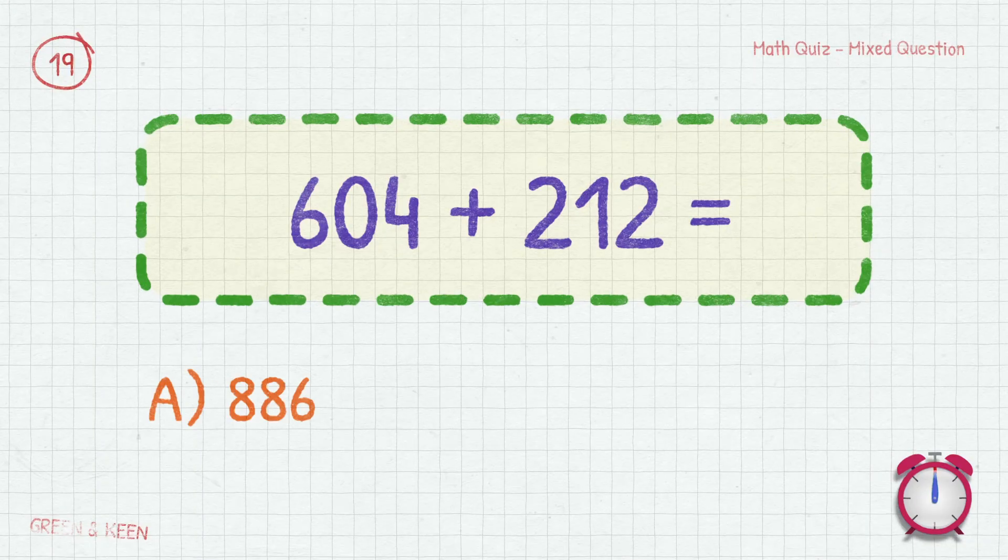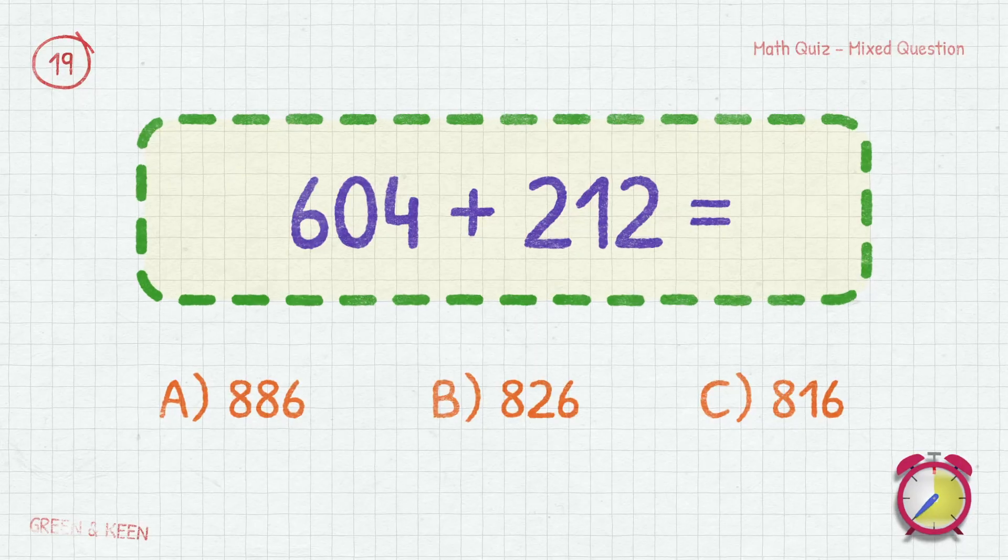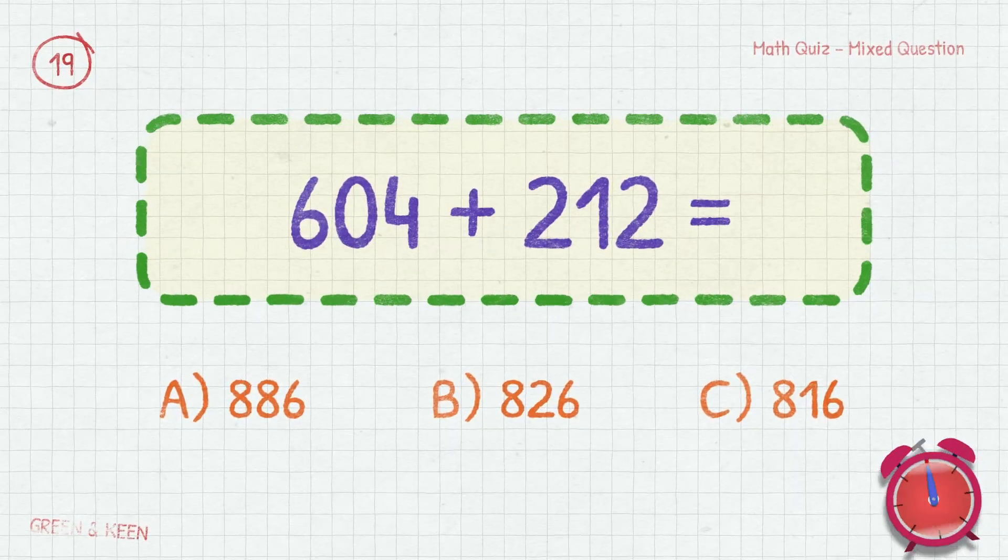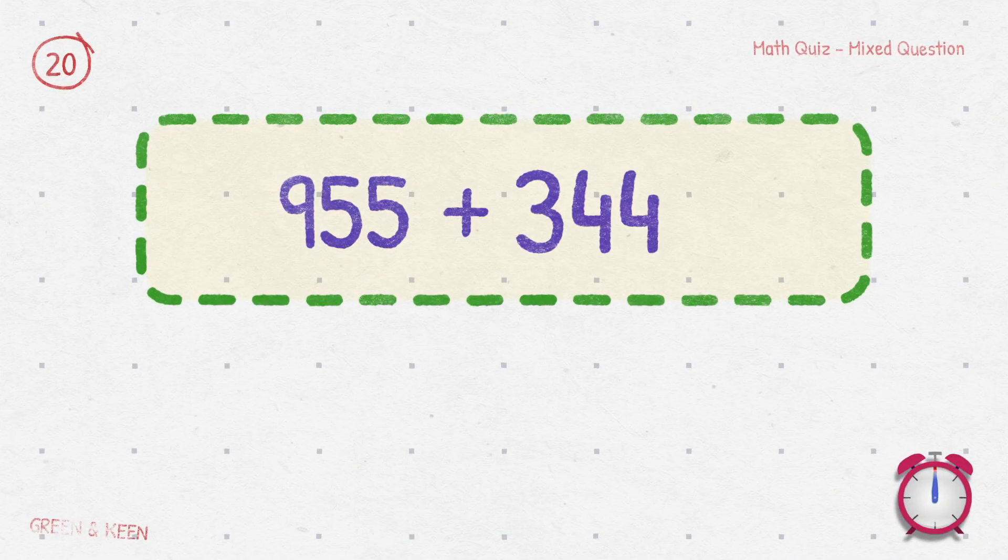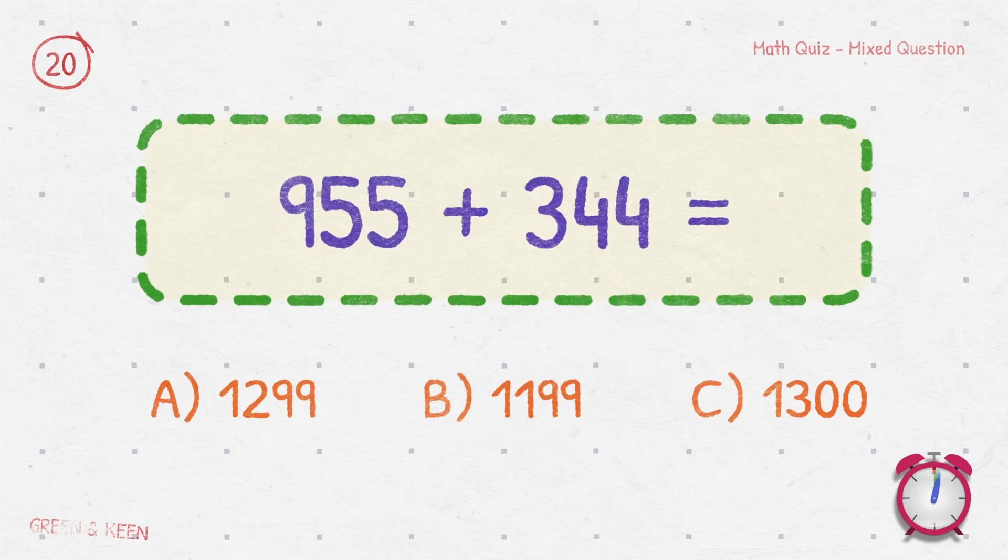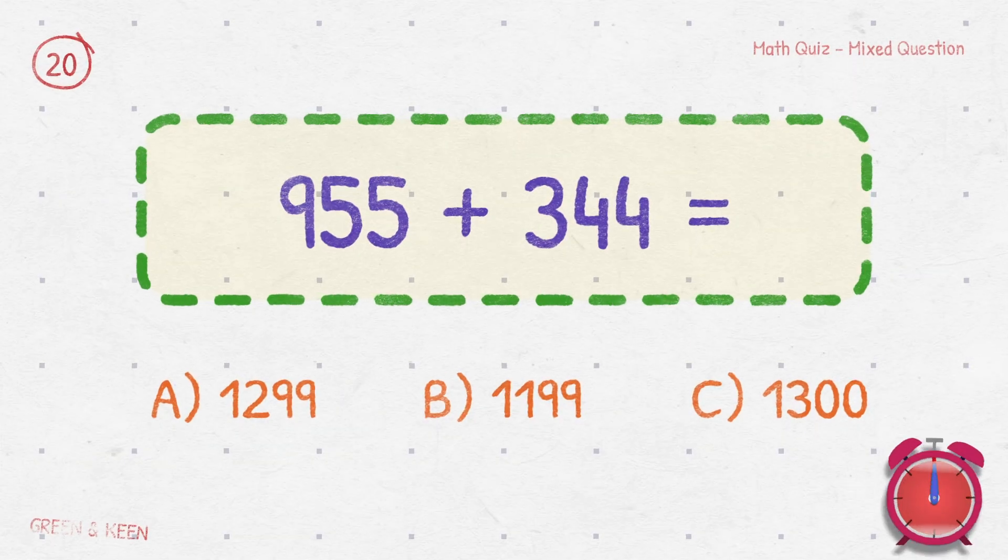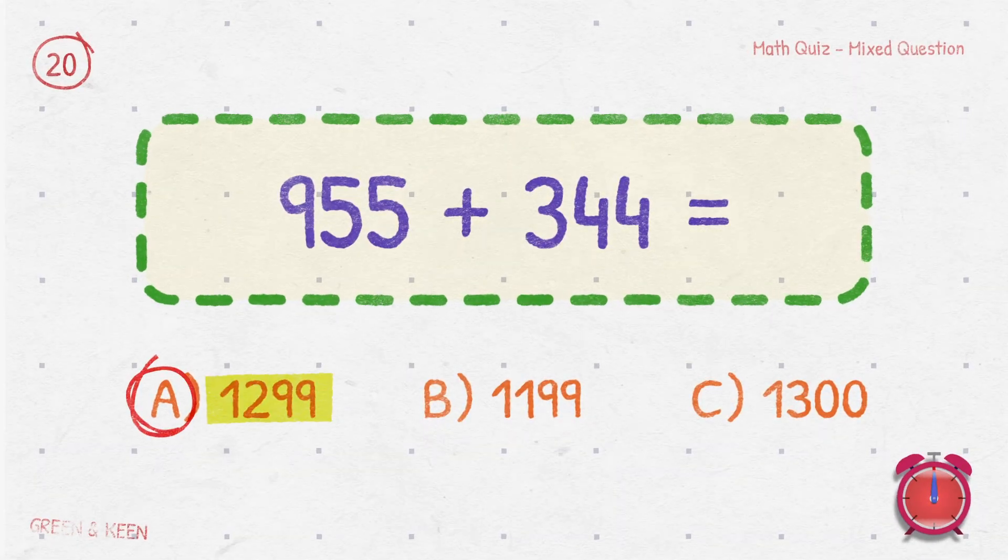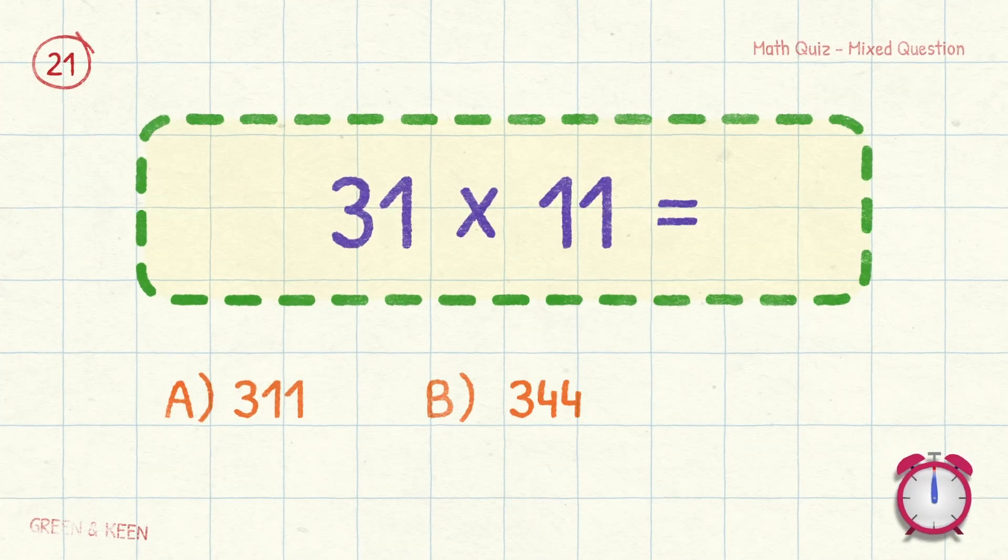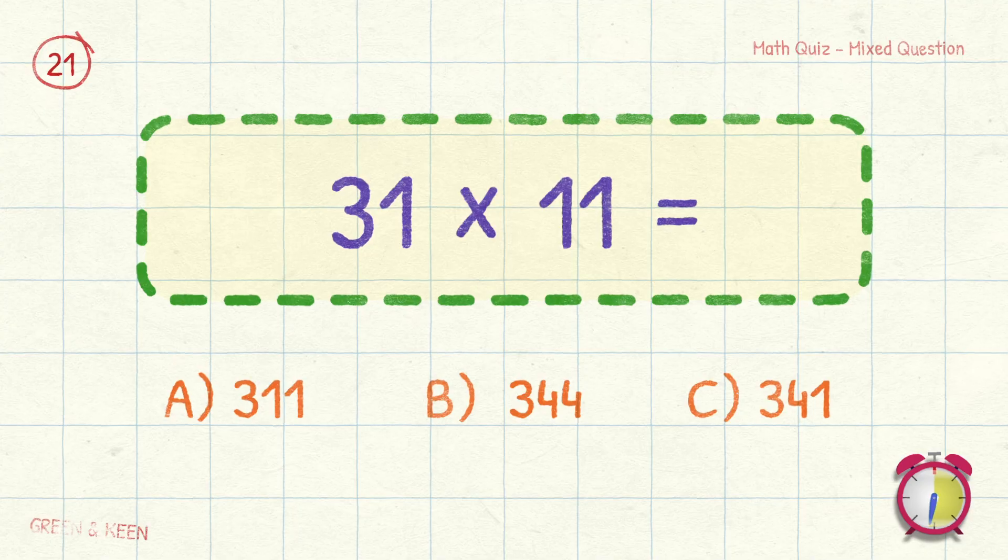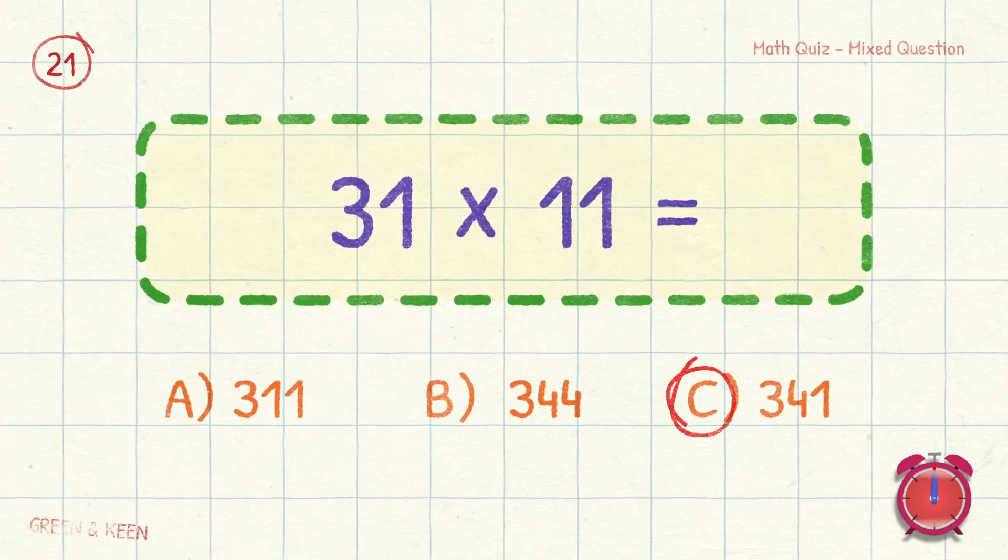6.04 plus 2.12 equals? 8.16. 955 plus 344 equals? 1299. 31 times 11 equals? It's 341.